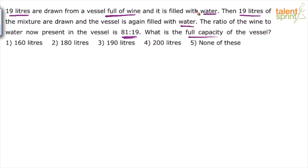If you have understood model 2 or model 3 of our video on allegations and mixtures, where we talked about removal and replacement — this is basically a case where you remove something from a mixture and replace it with something else. You remove the same quantity and replace with the same quantity of the other item. This is a continuous process done n times until you obtain some ratio.